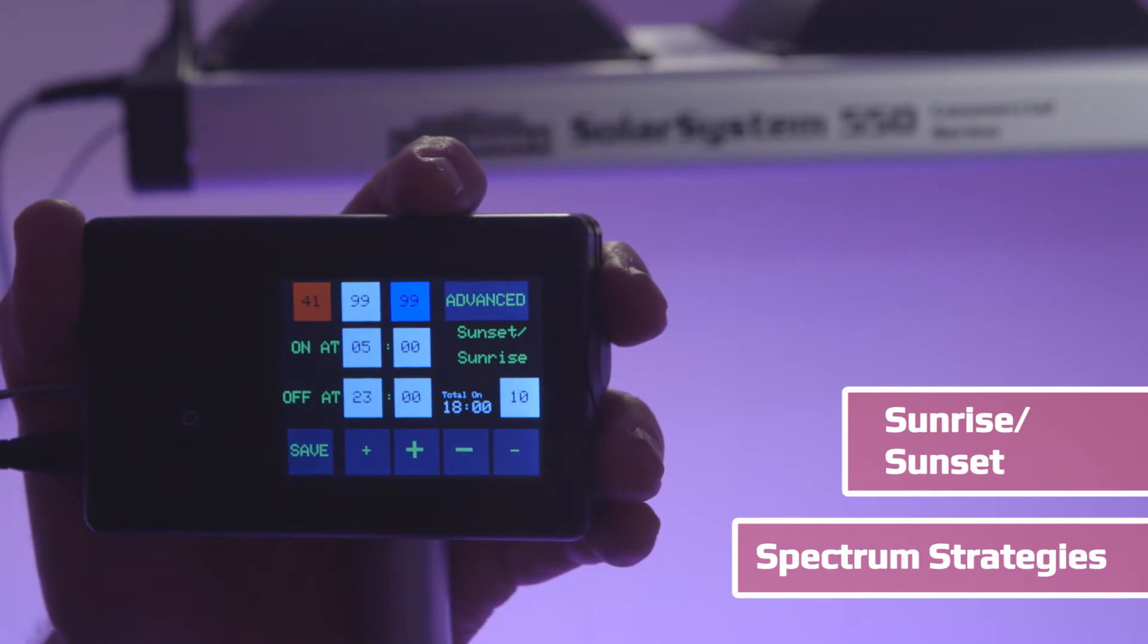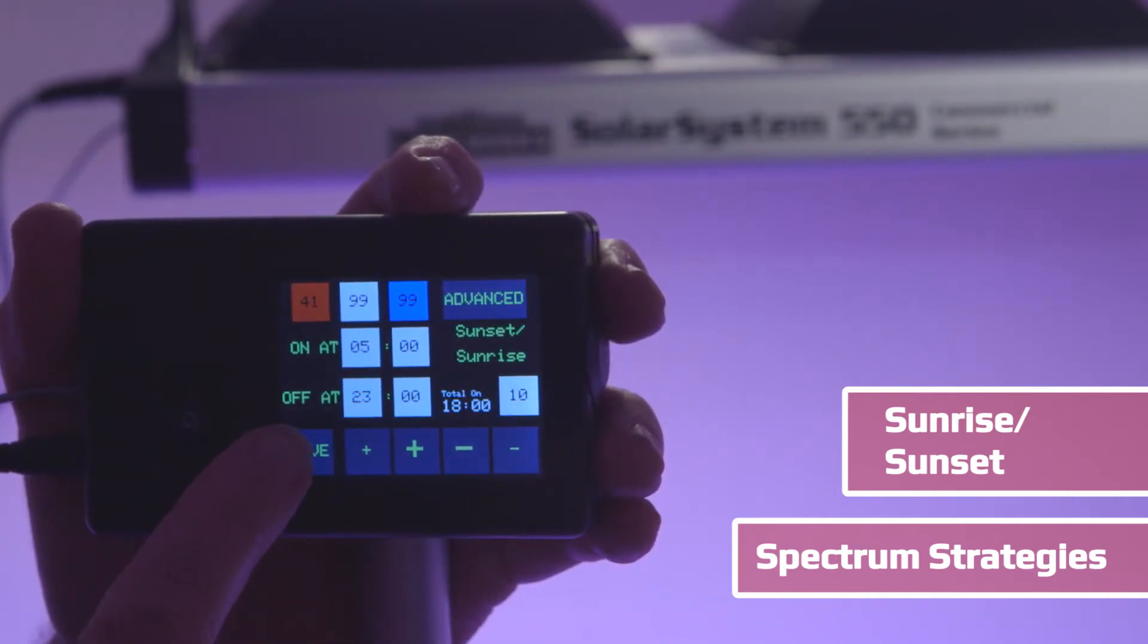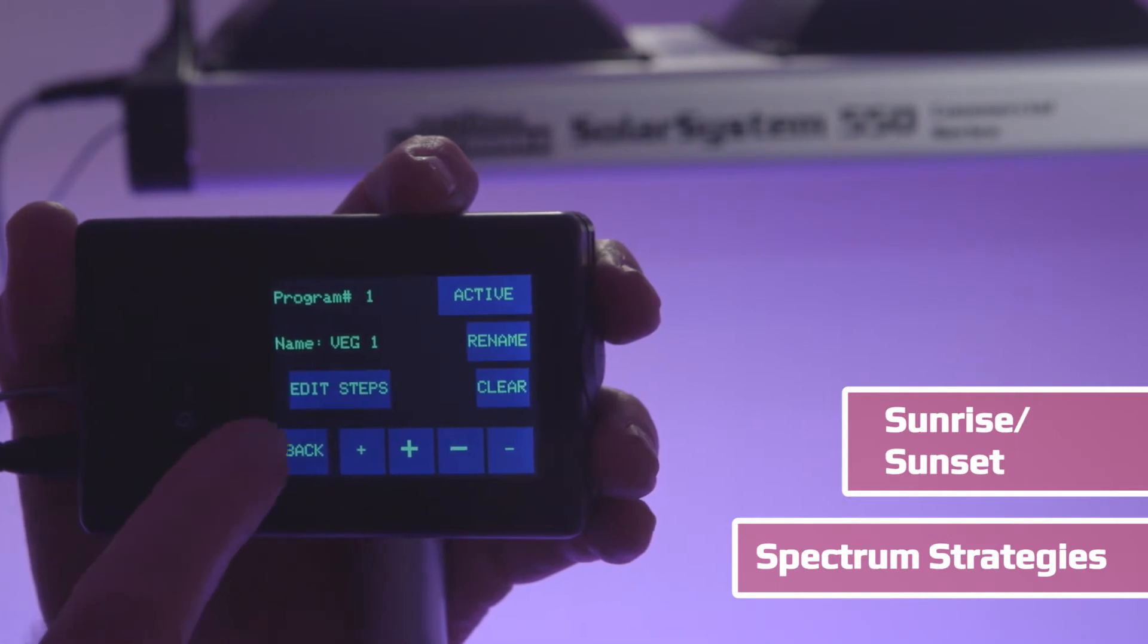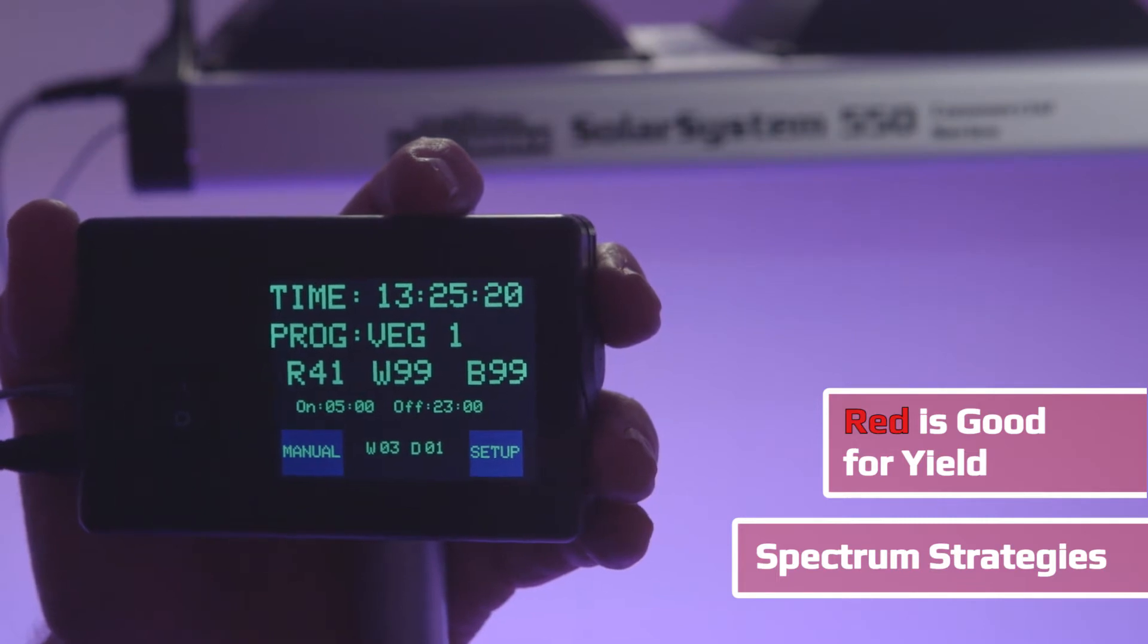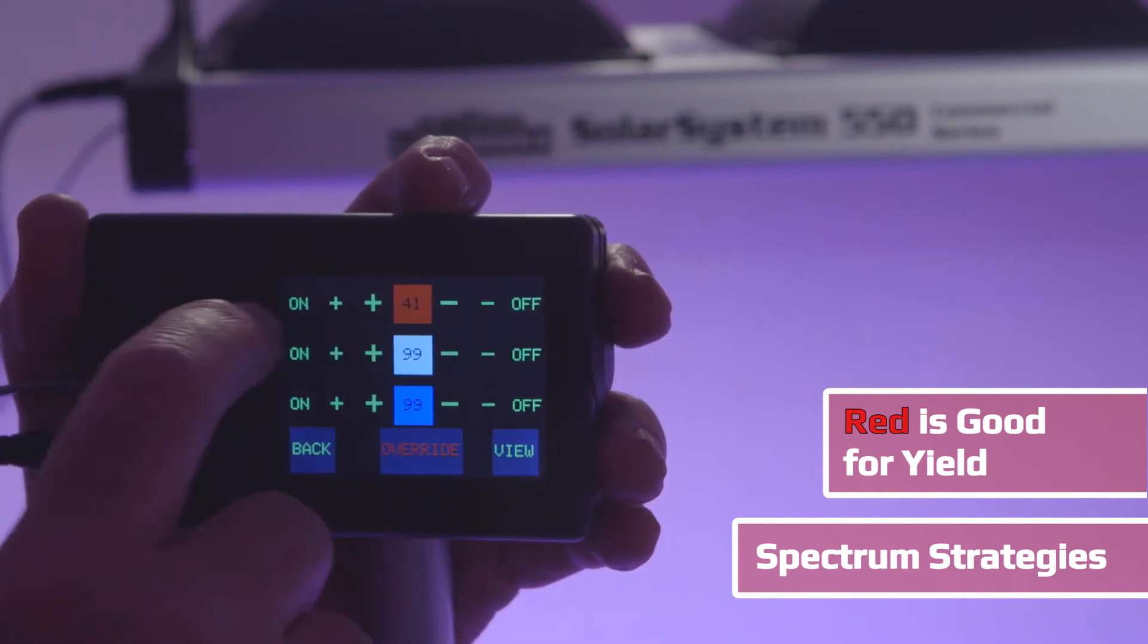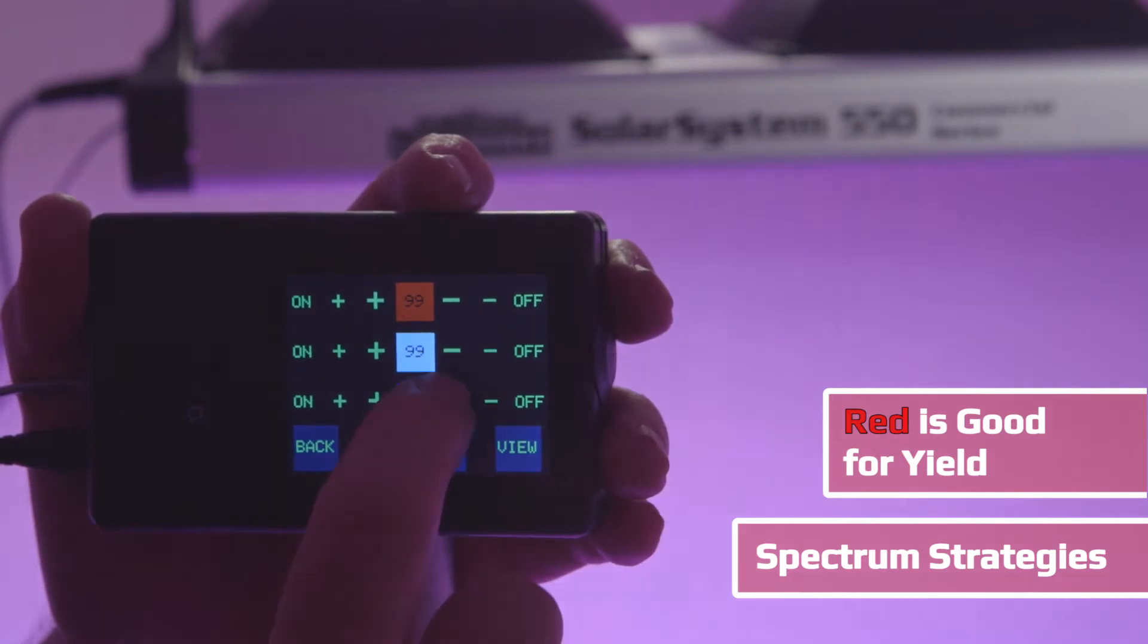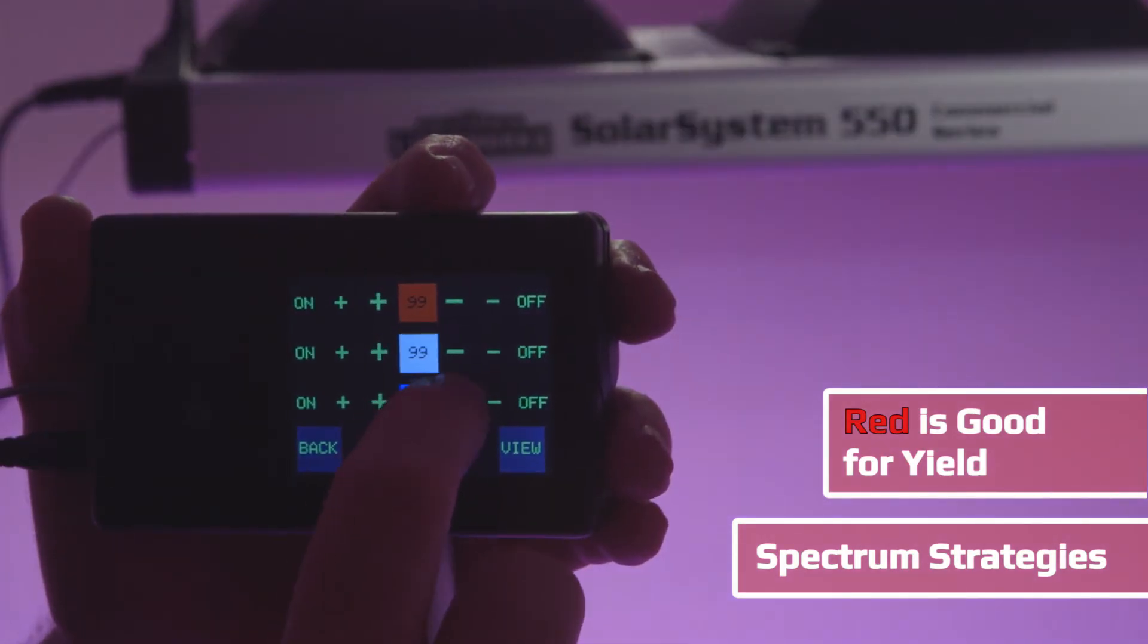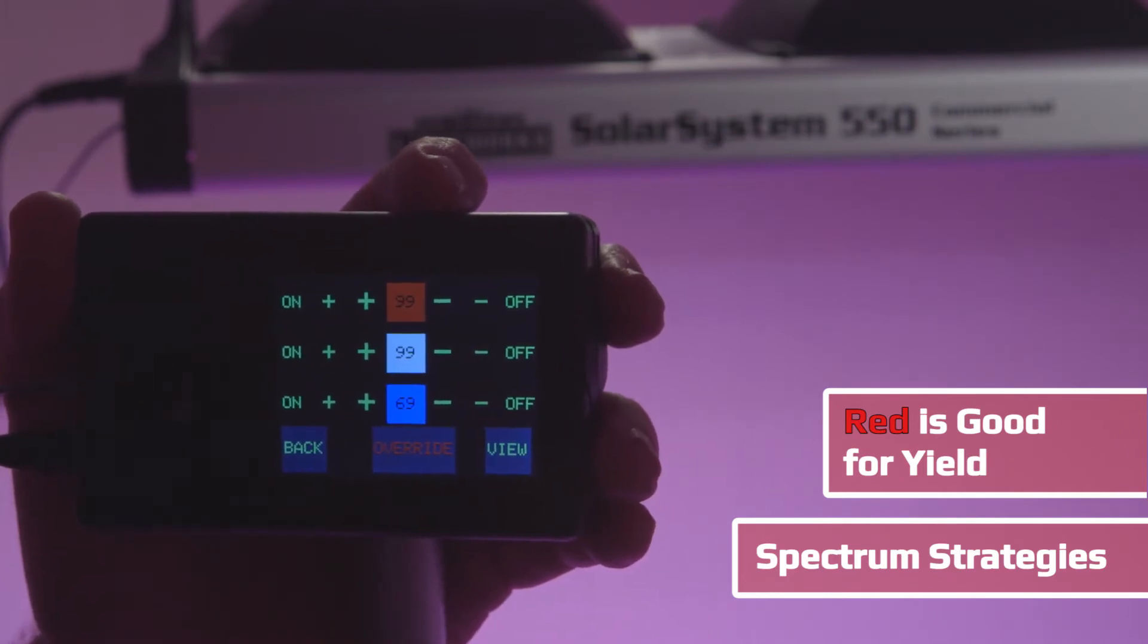Mostly through bloom, red, especially deep red at 660 nanometers, is where you get your yield. Heavy deep red is what you want.